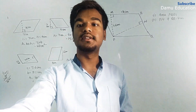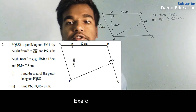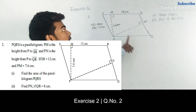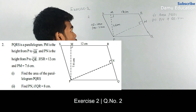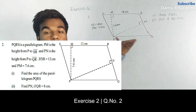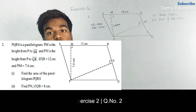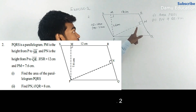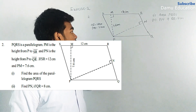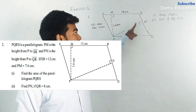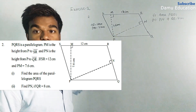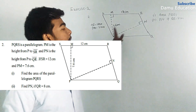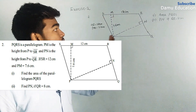Thanks for watching. Now for the second question: we have parallelogram PQRS. Height PM is given with base SR, with a measurement of 7.6 centimeters. Another perpendicular distance PN is given to base RQ. We need to find the area of parallelogram PQRS and the perpendicular distance PN.